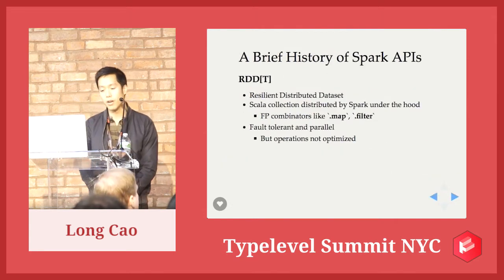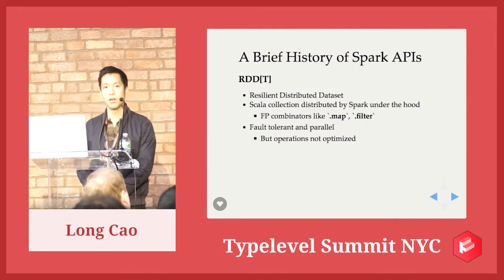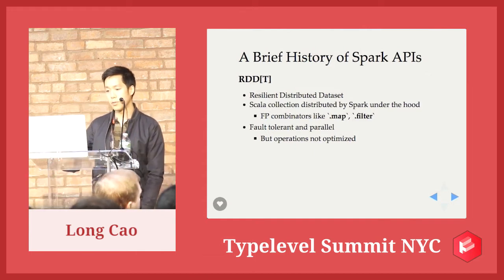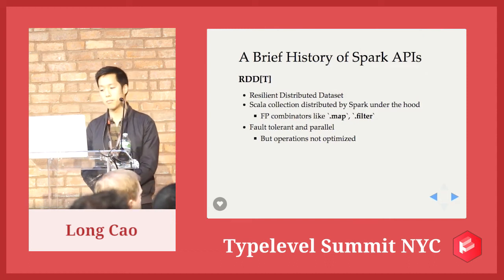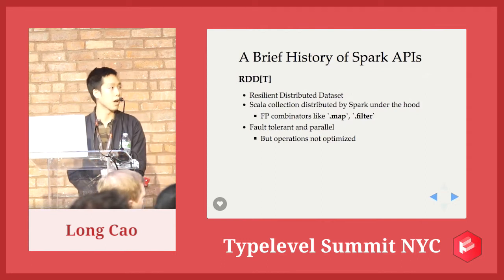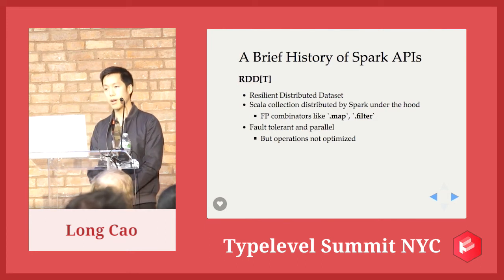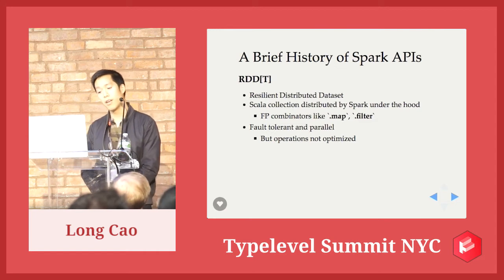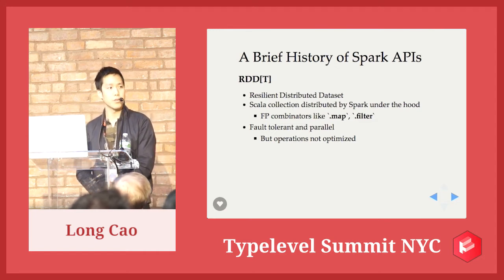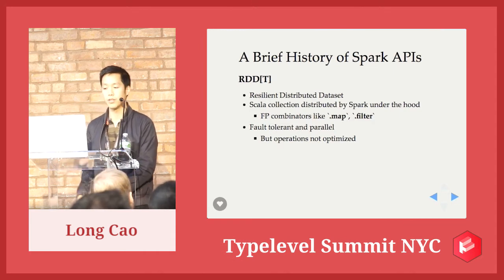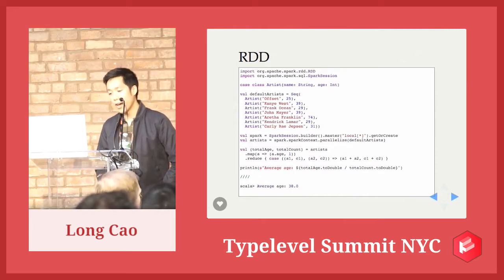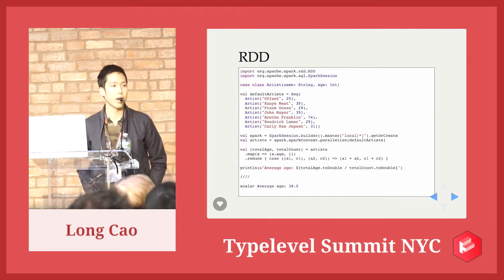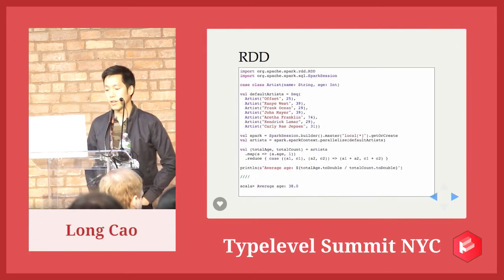In Spark, the original API was RDDs — Resilient Distributed Datasets. You'd be able to use FP combinators like map, filter, and all those familiar combinators from the Scala Collections library. RDDs are fault tolerant and parallel. But as you actually use RDDs, you may notice that it's not actually super well optimized under the hood. To show an example: we just define some musical artists, throw that in an RDD, and compute the average age of all these musical artists using combinators like map and reduce.